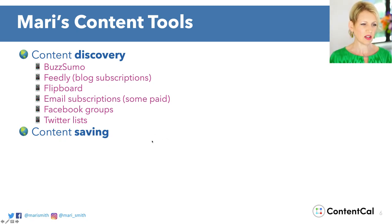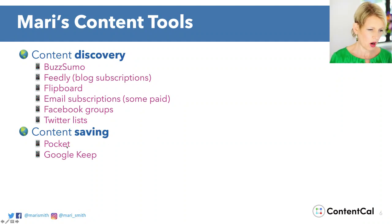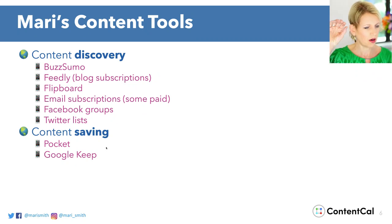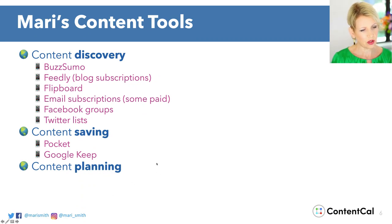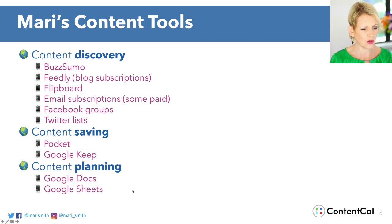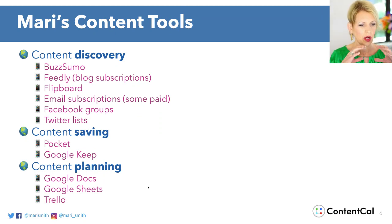Of course you want to be able to save content somewhere. I use Pocket a lot — I love the Chrome extension where you just hit that Pocket button and save something. You've got Google Keep, very similar. For planning, most people are probably going to use some kind of Google Doc or Google Sheet or maybe Trello — some kind of system where you're going to get with your team, or if you're a sole practitioner, just your own system.